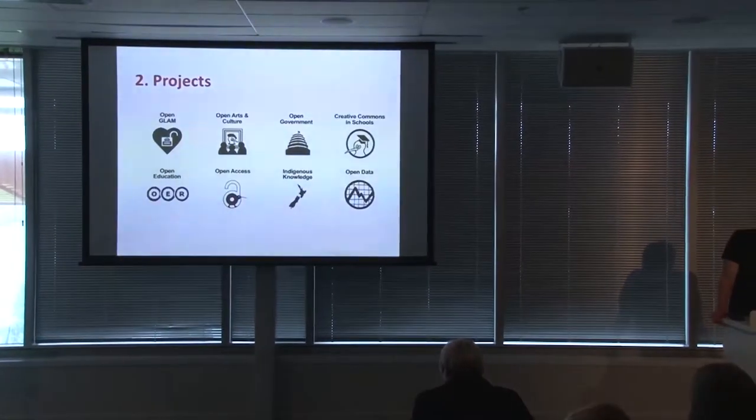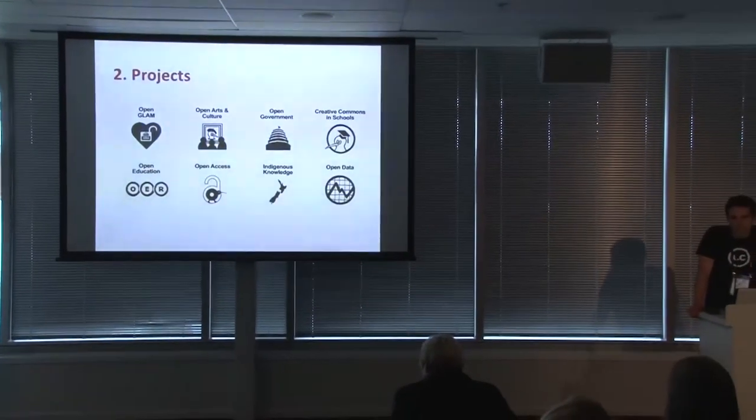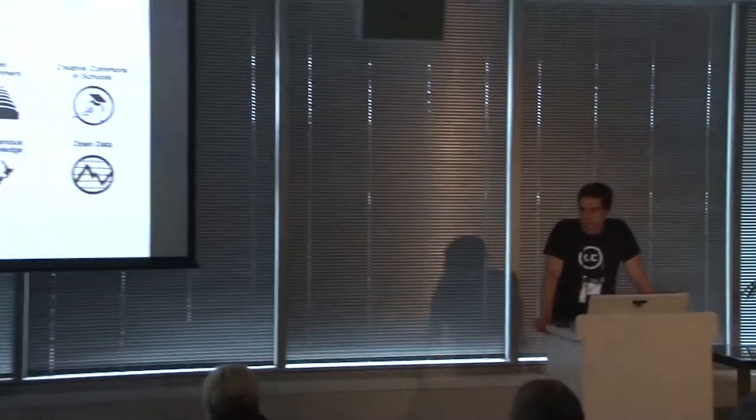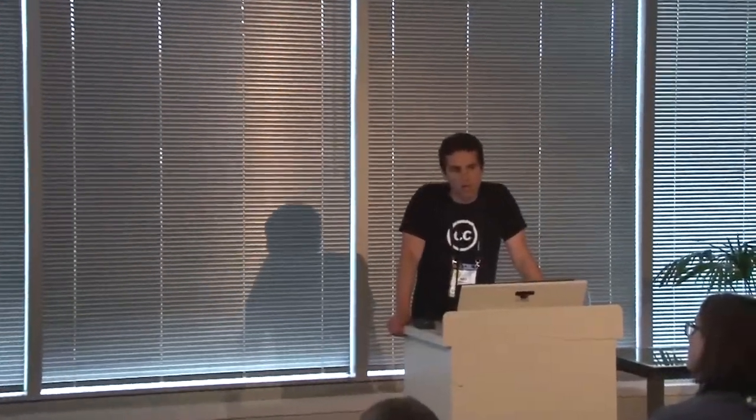The second thing we do is the active side of our organisation: we advocate for the use of Creative Commons licensing across eight different project areas, and GLAM is just one of them. GLAM has that top-left weird heart symbol — that's the international symbol for OpenGLAM. We've also got a bunch of other projects in culture, government, schools, data, indigenous knowledge, research, and education at a tertiary level too, just to give you a sense of the scope of what Creative Commons is trying to achieve.